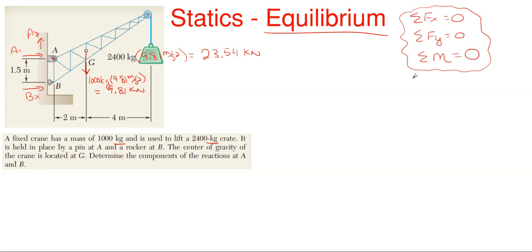In most problems you will have to use all three of these equilibrium equations to solve for all the reactions. Typically for reaction problems that involve two reactions such as a roller and a pin, you would want to use your moment first. I'm going to take counterclockwise rotation as positive and I'm going to sum moments about point B.